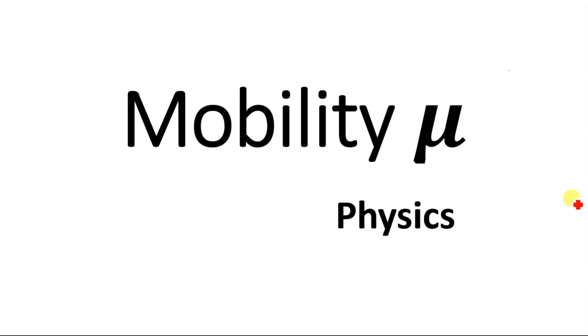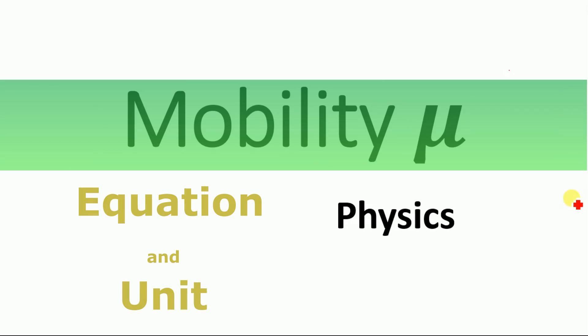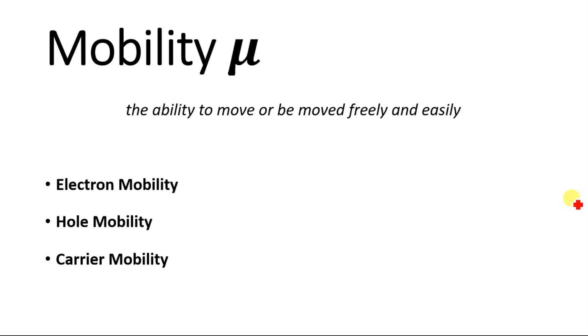Hello everyone, welcome to EasyEdu. Today we are going to discuss about mobility. We will derive the equation for mobility and explain the unit of mobility. Mobility literally means the ability of a body to move or to be moved freely and easily. If a body moves easily, then that body has high mobility, and if a body moves slowly, then that body has low mobility.